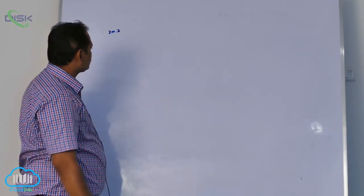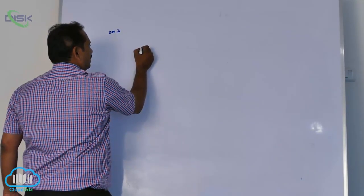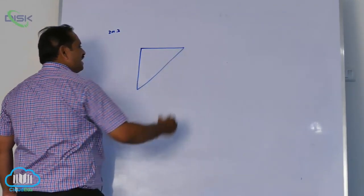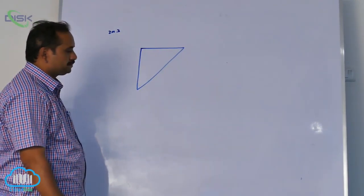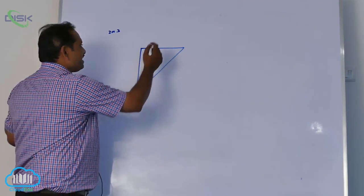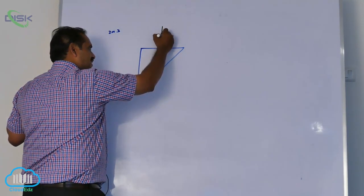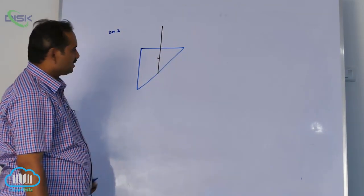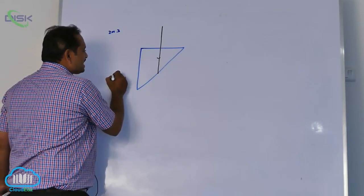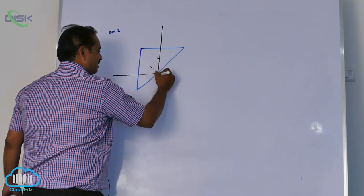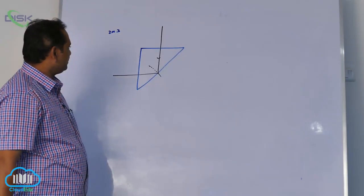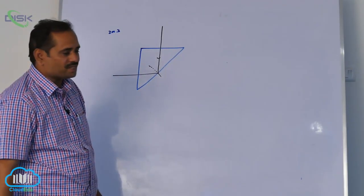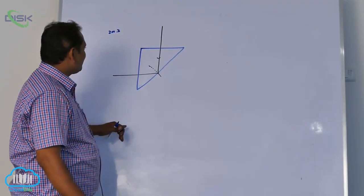The prism is like this - a right angle. Light is incident normal to the surface like this and comes out horizontally. Then, what is the minimum refractive index of the prism?